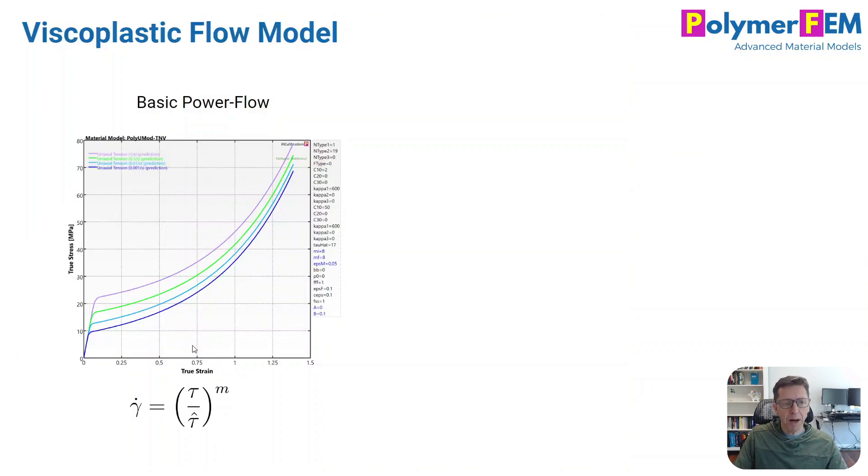So this is a power flow model. I use a two network representation here. The rate of viscoplastic flow is proportional to the shear stress that drives the relaxation and flow raised to power exponent m. That is what gives us this kind of response. If m is relatively large, here m is 8, we'll see that there is no viscoplastic flow until some value of stress and then the flow goes pretty quick.